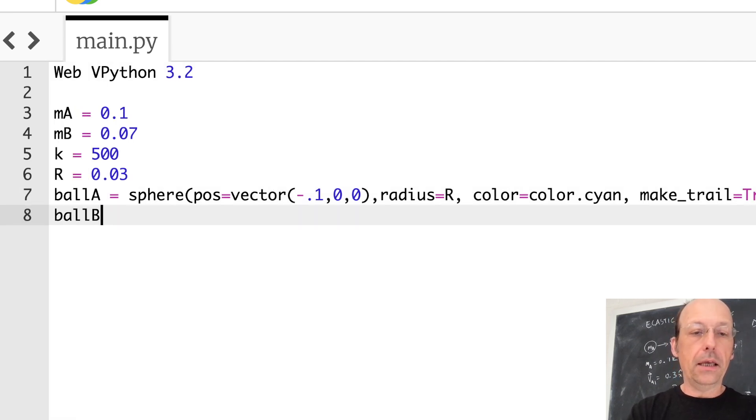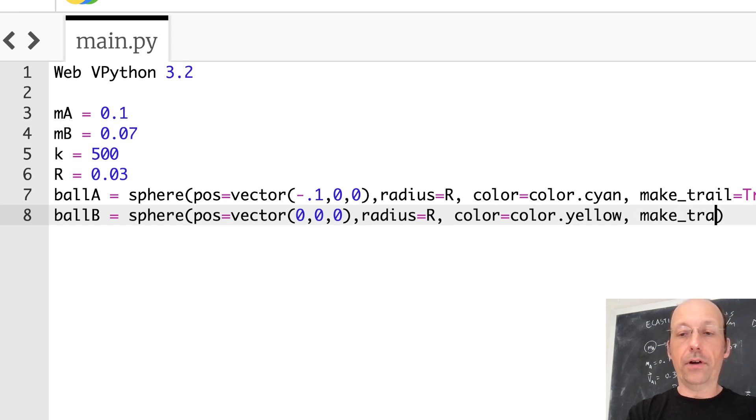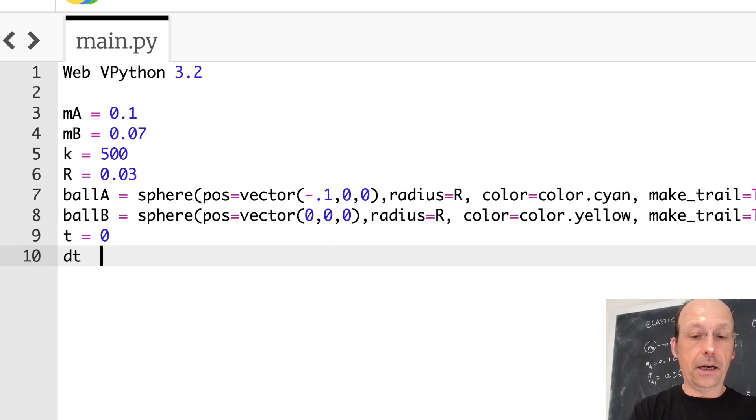And then here's my other object. Ball B equals sphere. Position equals vector 0, 0, 0. Set the origin. The radius is R. The color is color dot yellow. You can pick your own colors. And then also make trail equals true.